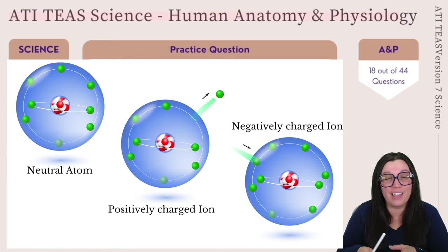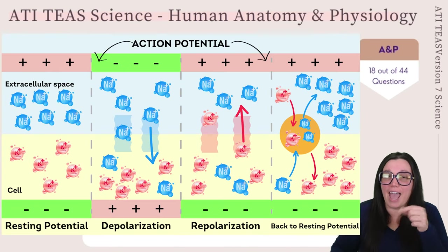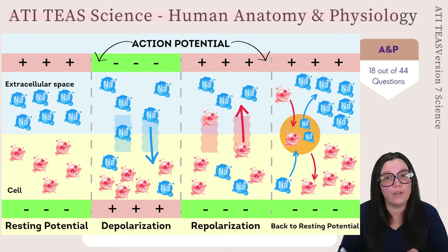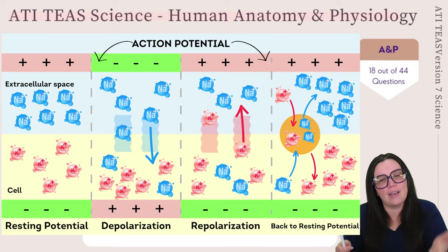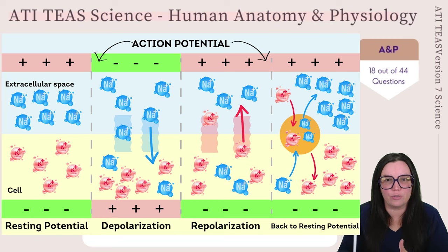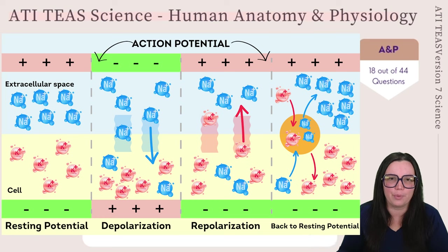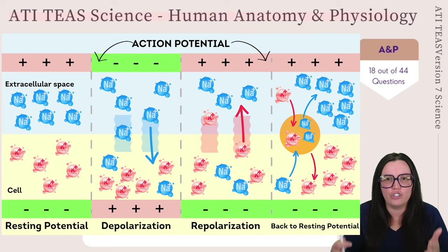An ion is an atom or molecule that has either gained or lost one or more electrons and is as a result either positively or negatively charged. An action potential is essentially an electrical signal that travels along nerve cells — also known as neurons — to our muscle cells. These signals are important for these cells to communicate so they can perform functions like moving our arm or sensing heat. The depolarization phase refers to the specific part of the signal's journey where normally, inside our neuron, it is more negatively charged than on the outside — that's its resting state. When the neuron receives a strong enough signal, it triggers an action potential, and during depolarization the inside of the neuron rapidly becomes more positive, helping push the action potential along.